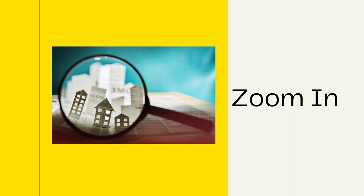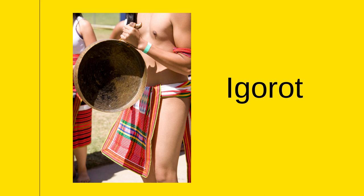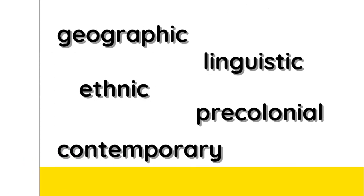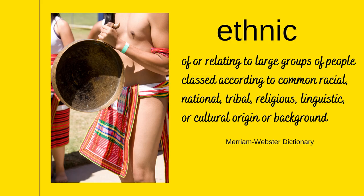Are you ready? Let's start with picture number one. The first picture is an Igorot. Is this word related to geographic, linguistic, ethnic, pre-colonial, or contemporary? It is connected to ethnic. Ethnic means of or relating to large groups of people classed according to common racial, national, tribal, religious, linguistic, or cultural origin or background.